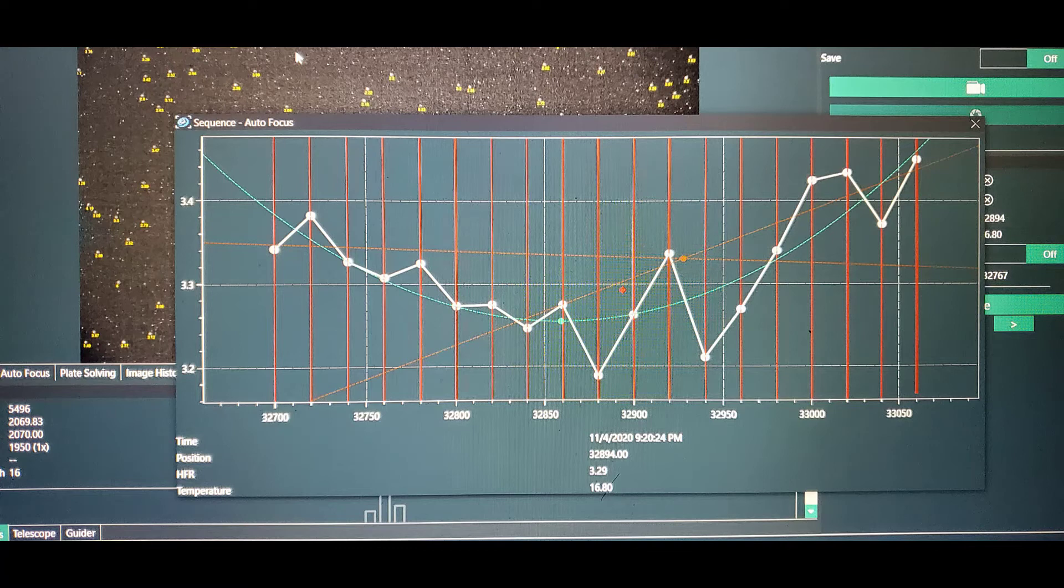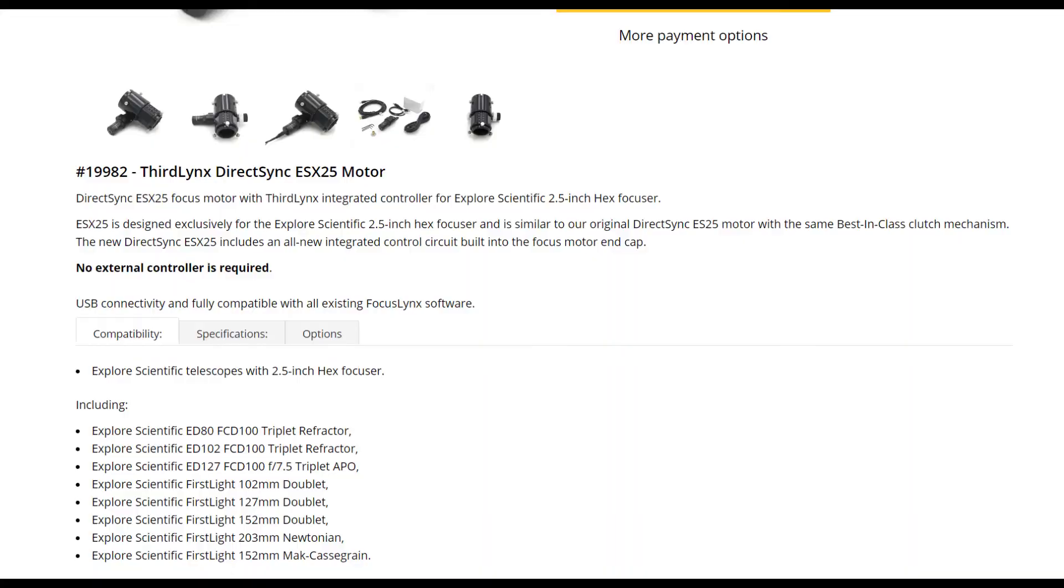I was actually able to do a lot better than what these focus curves show in Nina, but after I learned a little bit more about backlash and how to set up in this case the overshoot method, I got it to work very reliably and very quickly as well. So as you can see from the installation, this Optech DirectSync ESX25 focus motor was designed and built for this particular focuser.